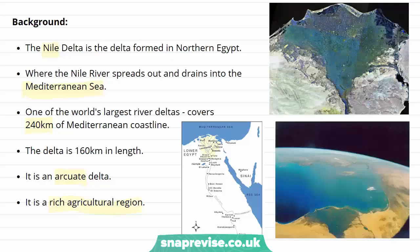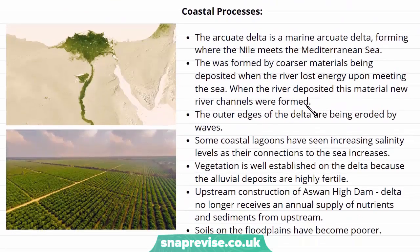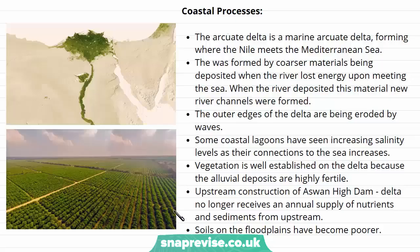As we can see, and what we will learn in the rest of the video, is how much importance and significance the Nile Delta has for Egypt, its economy and its health. Next, we're going to look at some of the coastal processes occurring in the Nile Delta. Here is another satellite image showing the River Nile and the delta as it reaches the Mediterranean Sea, and this is a photograph of some agricultural farms on the Nile Delta itself.